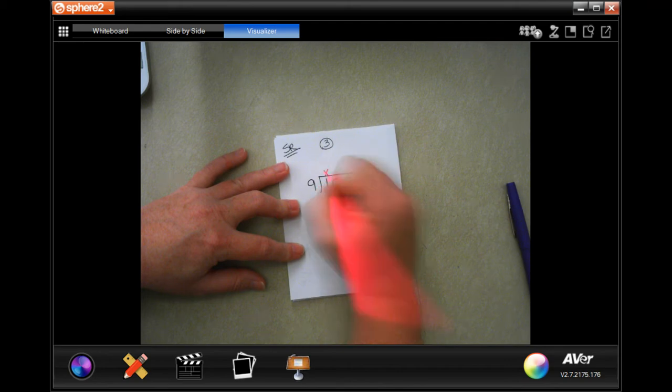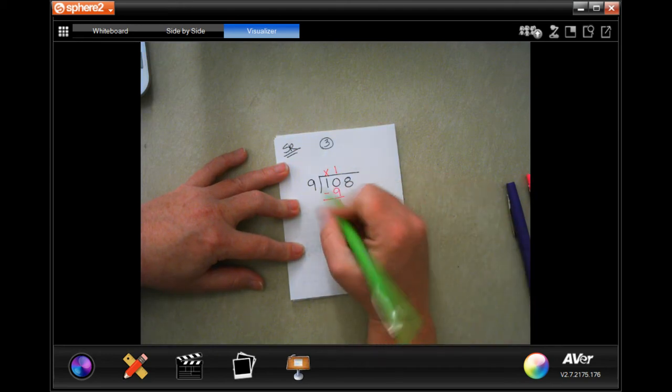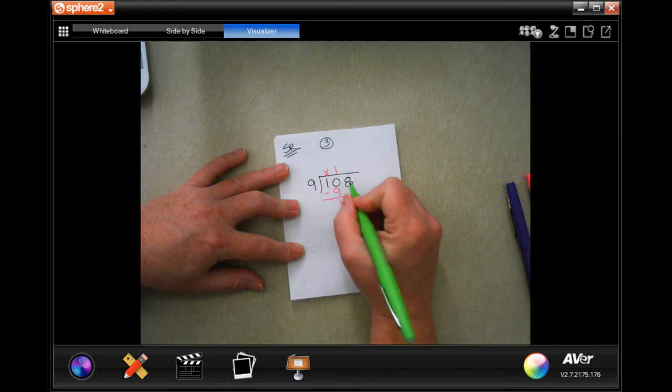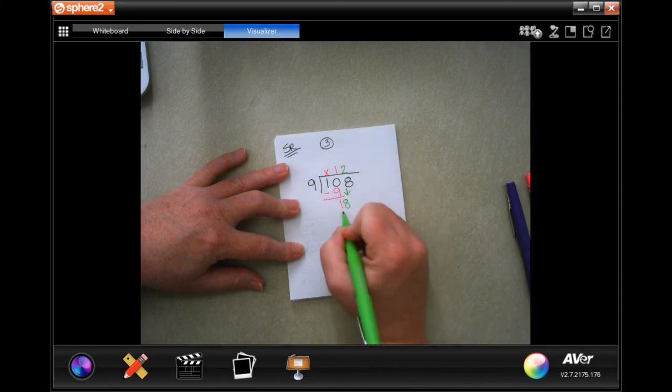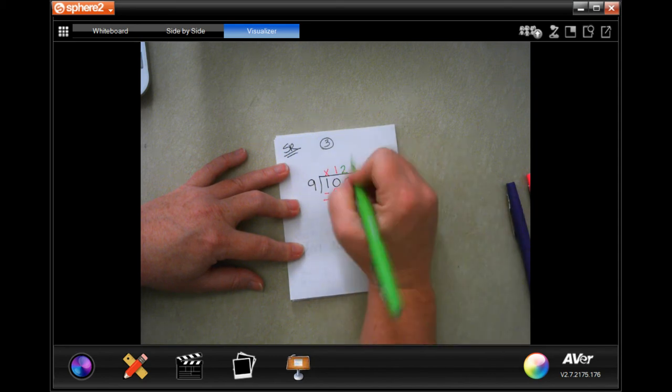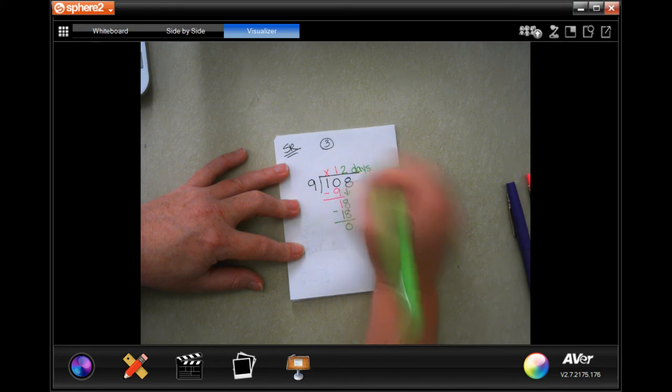9 is not going to go into 1. 9 will go into 10 one time. 1 times 9 is 9, subtract and get 1. 1 is smaller than 9, that's my check, so I can bring down my 8. 9 goes into 18 two times. 2 times 9 is 18, subtract zero. So 12 days.